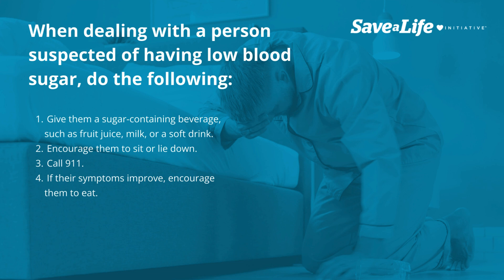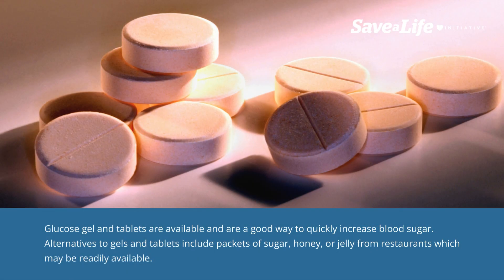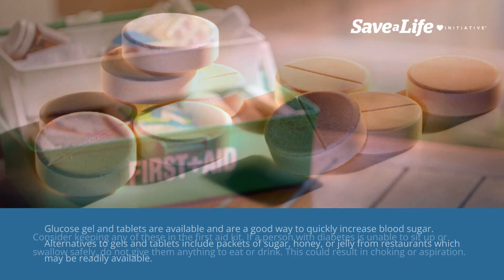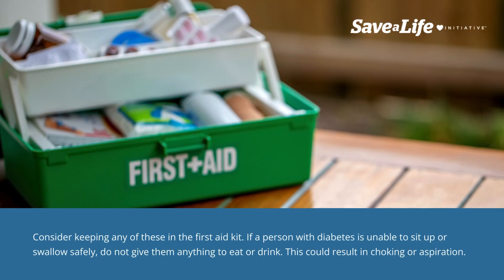4. If their symptoms improve, encourage them to eat. Glucose gel and tablets are available and are a good way to quickly increase blood sugar. Alternatives to gels and tablets include packets of sugar, honey, or jelly from restaurants which may be readily available. Consider keeping any of these in the first aid kit.